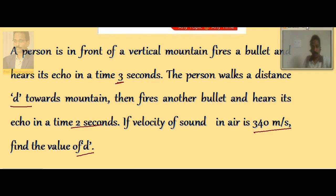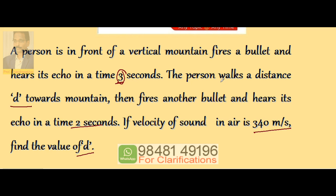So, the person standing in front of the mountain first fires the bullet and hears its echo in 3 seconds. He walks a distance towards the mountain and again fires the bullet, hearing its echo in 2 seconds. What is the distance through which he has moved?